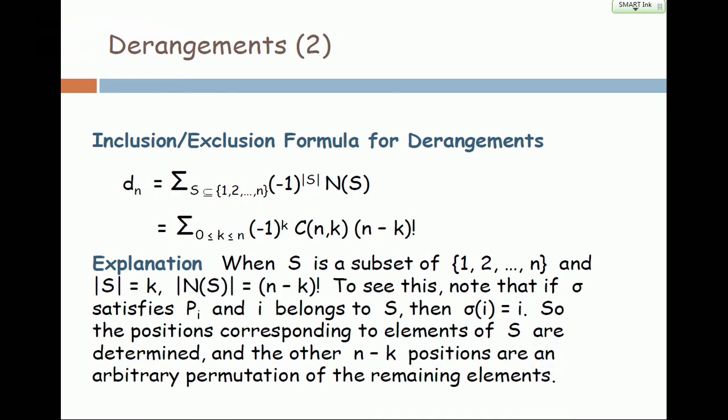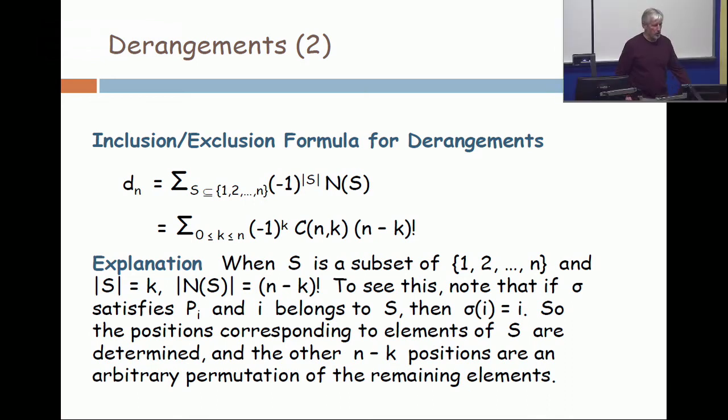And the inclusion-exclusion formula, I'll just write it down. It's the same formula that we've used. It's the sum over 1 to n of minus 1 to the cardinality of S times the number of permutations which satisfy the properties in S. But what are the properties? When you apply inclusion-exclusion, the tricky part of it is to choose your properties wisely.